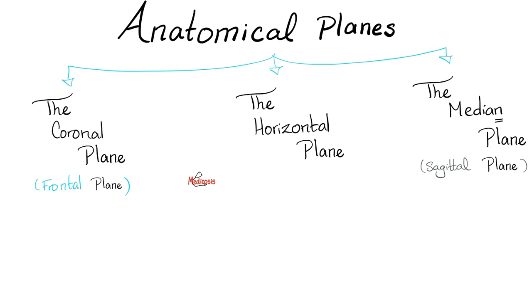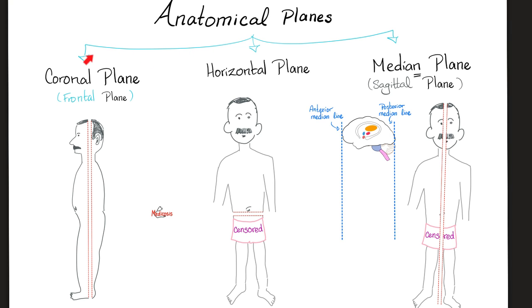The anatomical planes are mainly three. The coronal plane, aka frontal, the horizontal plane, the median plane, aka sagittal. Coronal plane - you cut me like this into a front half and a back half. There is also the horizontal plane. You cut me horizontally into an upper part and a lower part.